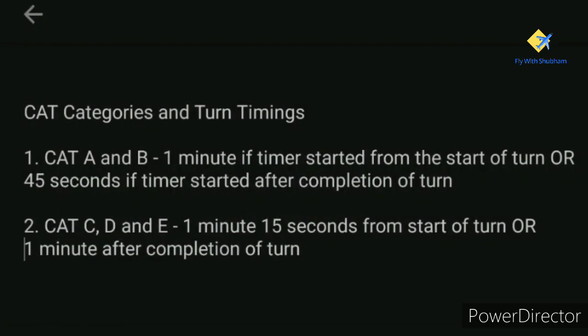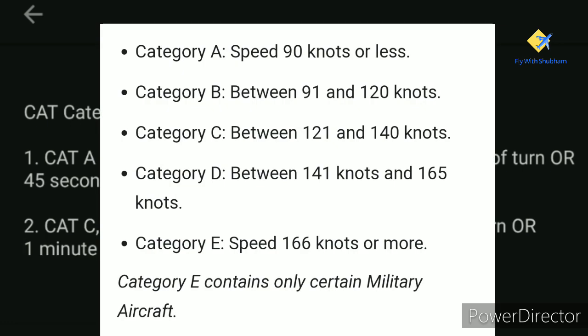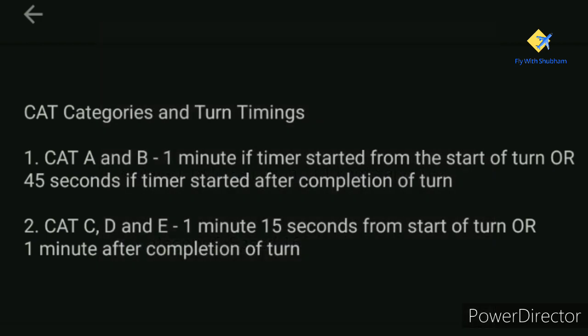Before we go further, it is important that we note the CAT approach speeds. CAT A is 90 knots or less, CAT B is 91 to 120 knots, CAT C is 121 to 140 knots, CAT D is 141 to 165 knots, and CAT E is military operations at 165 knots or greater.